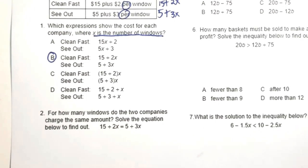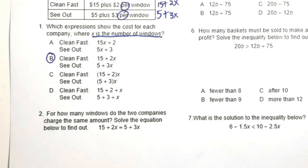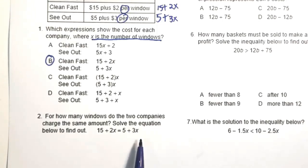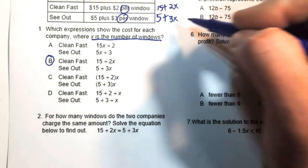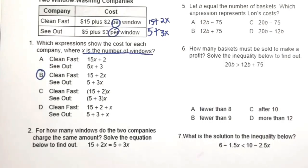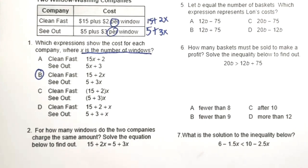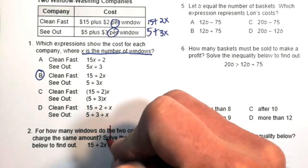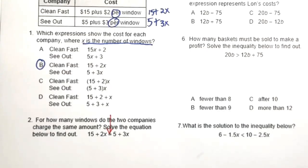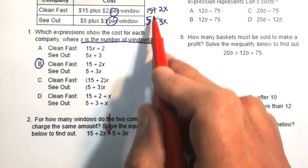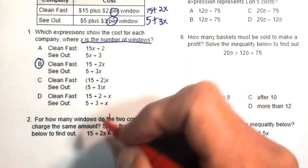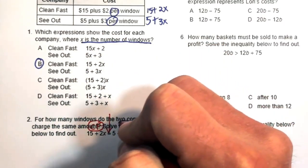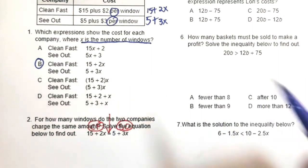Number two asks: for how many windows do the two companies charge the same amount? Even if they didn't give us this equation, we know that to find when they charge the same amount, we set those two expressions equal to each other. They've done that for us. Notice 15 plus 2x is Clean Fast and 5 plus 3x is C-Out.